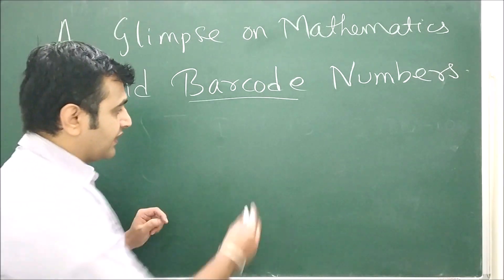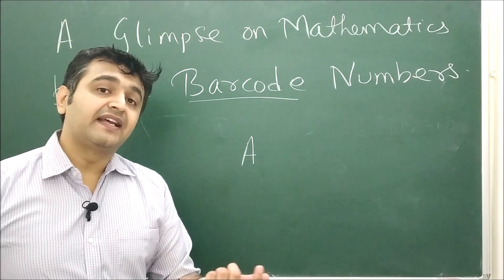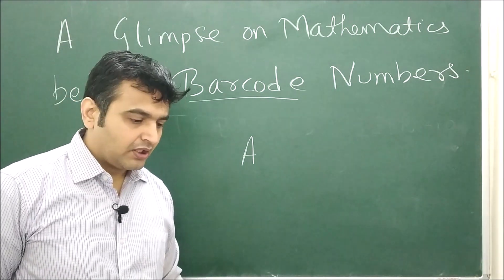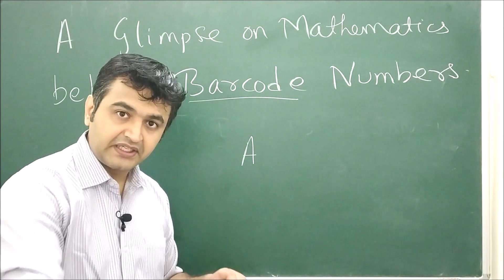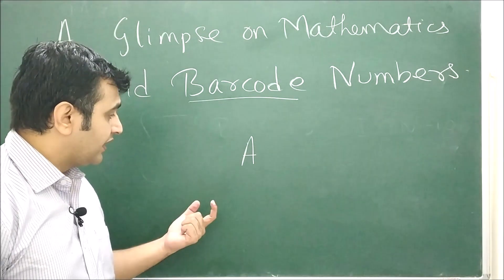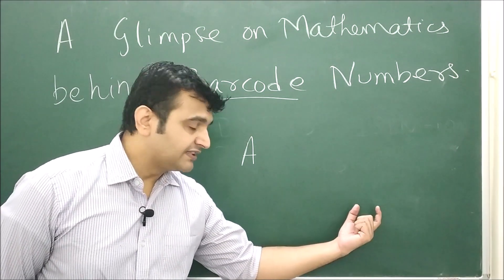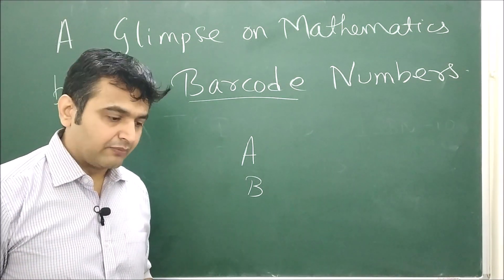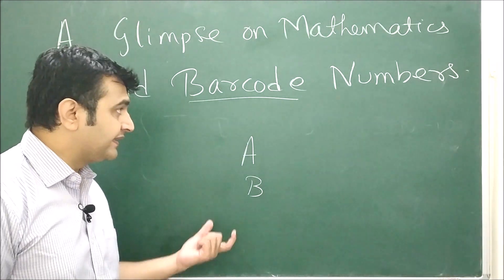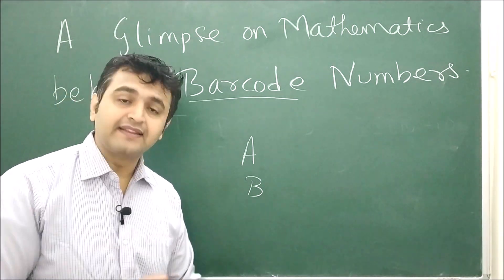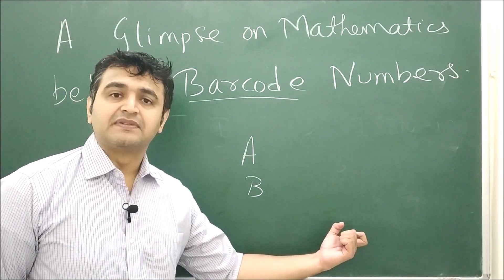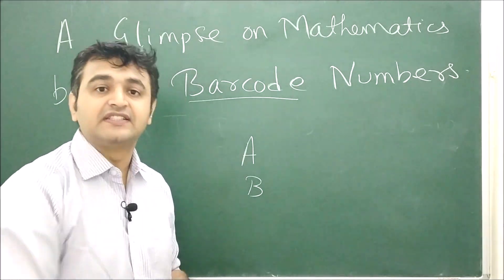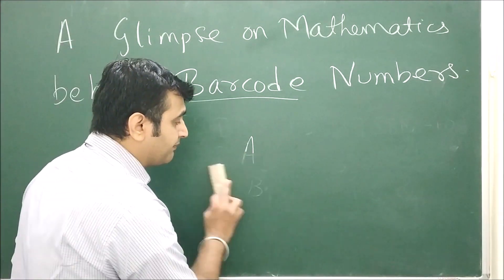Secondly, suppose I observe that Type A jeans have seen a drastic increase in demand and I want to raise the price from 2,000 to 3,000 Rs. I won't take out each jeans and change the sticker — I have their barcode numbers. In the system, I enter the barcode number and change the price to 3,000 Rs. Similarly, if Type B jeans are not selling, I just decrease the price by entering the barcode number in the software. It really saves time — no need to do it individually on each product. These are the plus points of having barcodes.